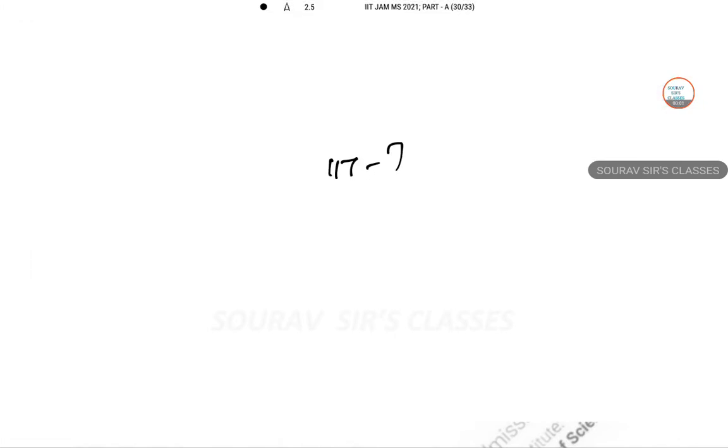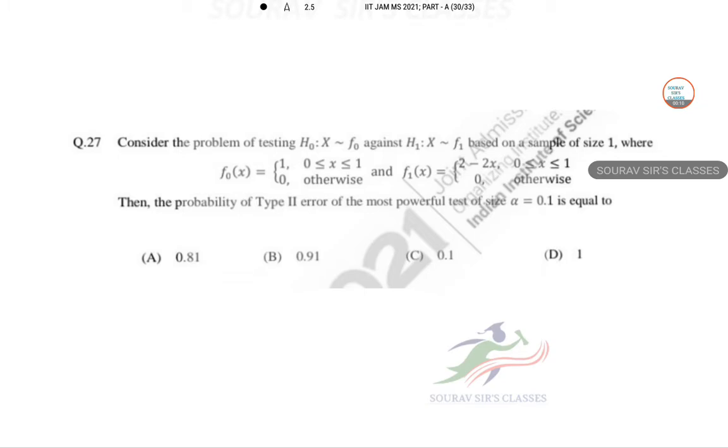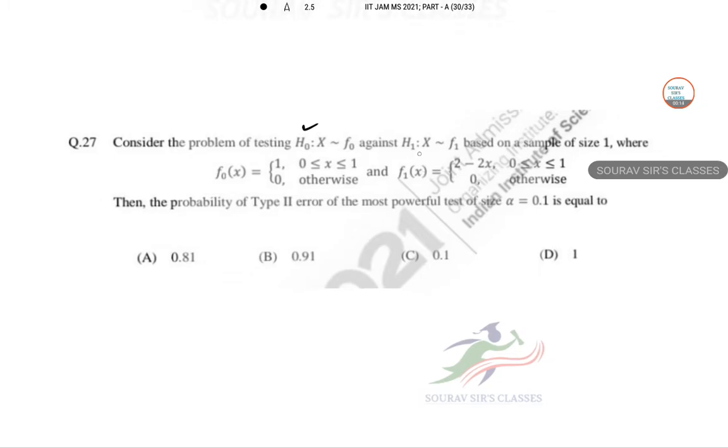This is ITJAM mathematical statistics 2021 solution. This is question number 27: consider the problem that H0 null hypothesis X belongs to F0 and H1 belongs to F1, based on sample size 1.